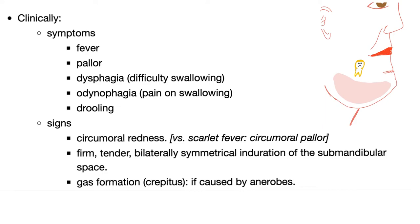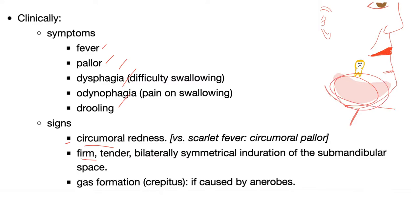Signs and symptoms. Symptoms include fever, pallor, dysphagia, odynophagia, and drooling. Signs include circumoral redness, a firm, tender, bilateral, asymmetrical induration of the submandibular space. Gas formation produces crepitus if caused by an anaerobe.